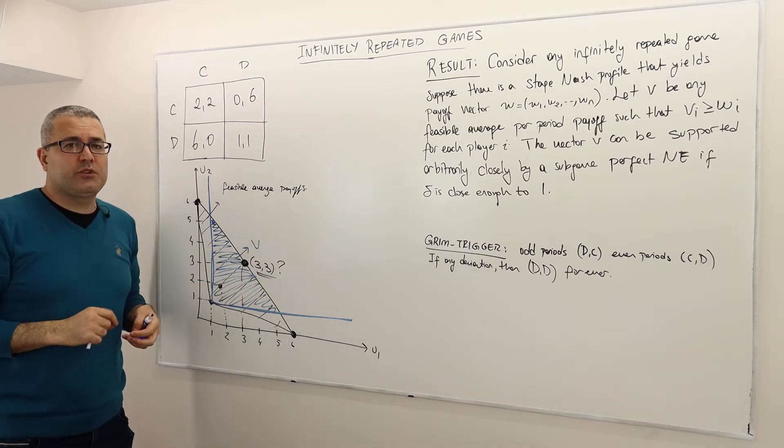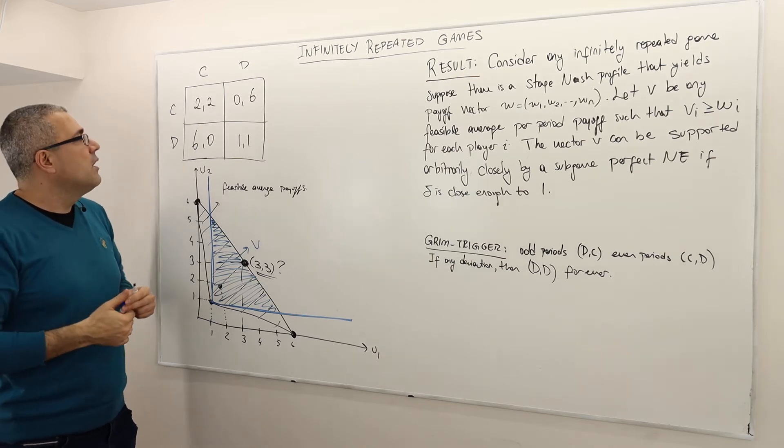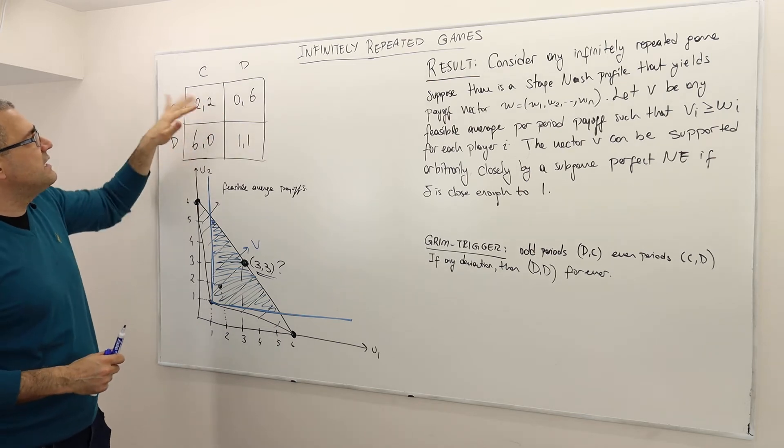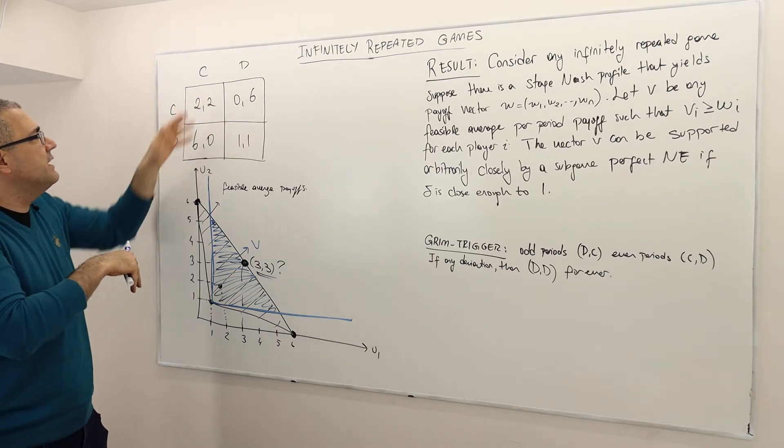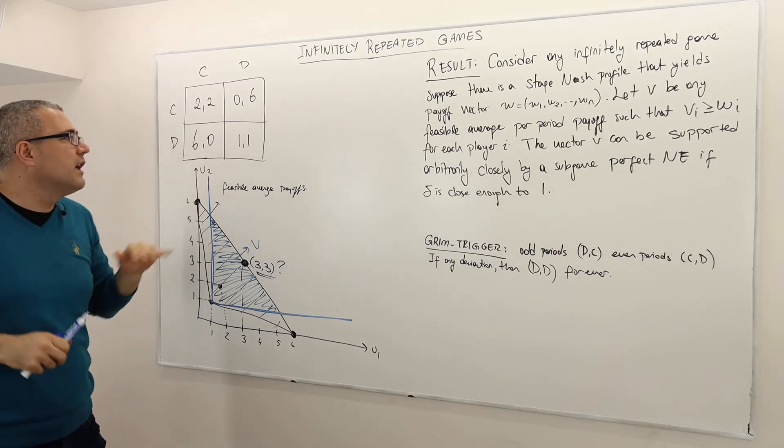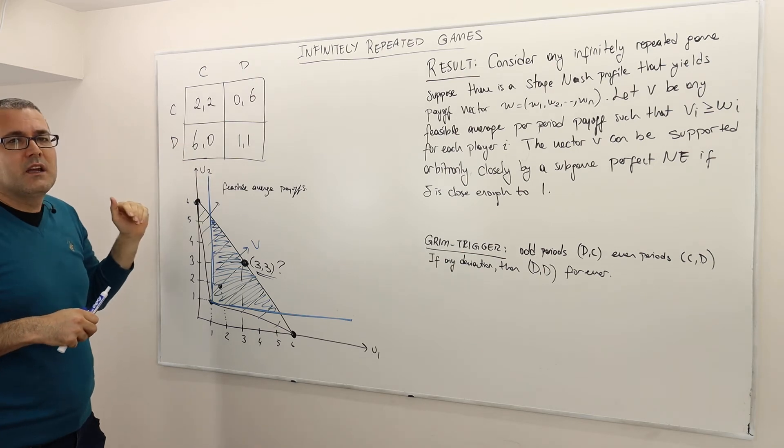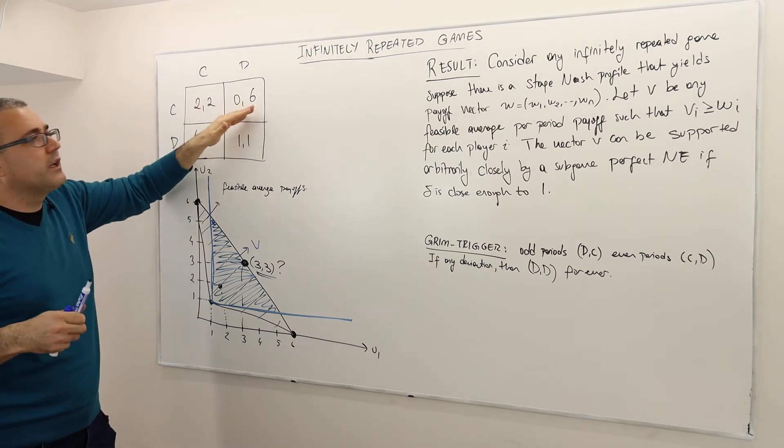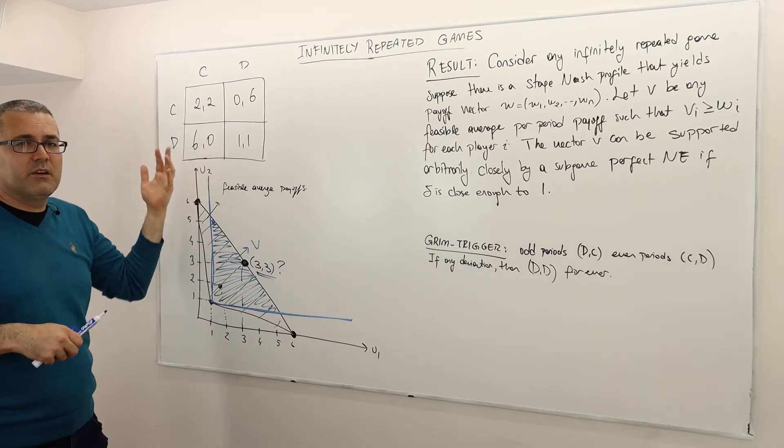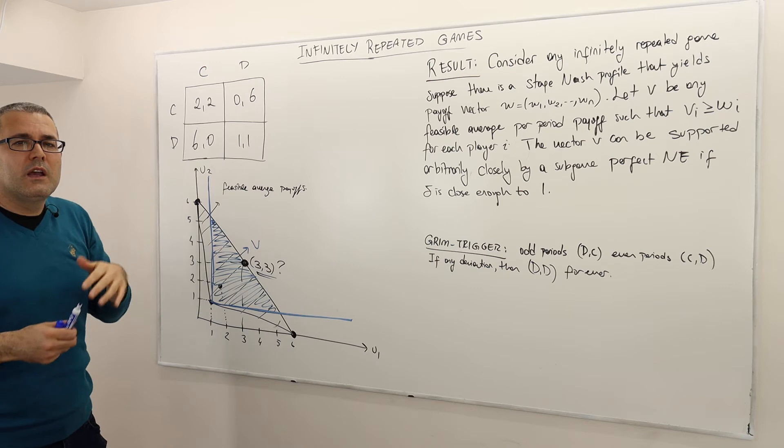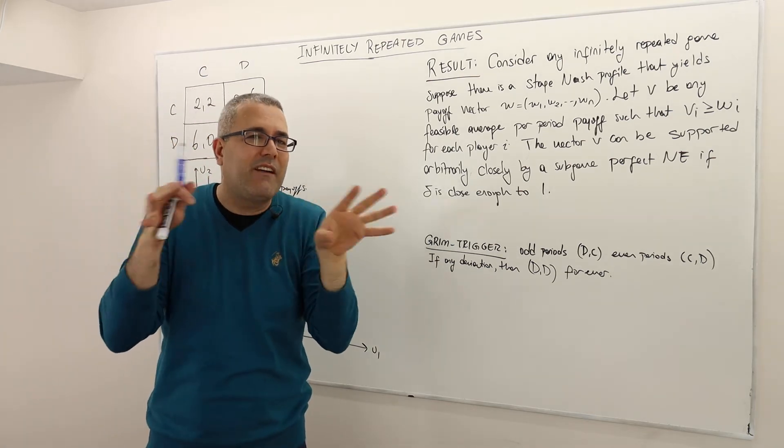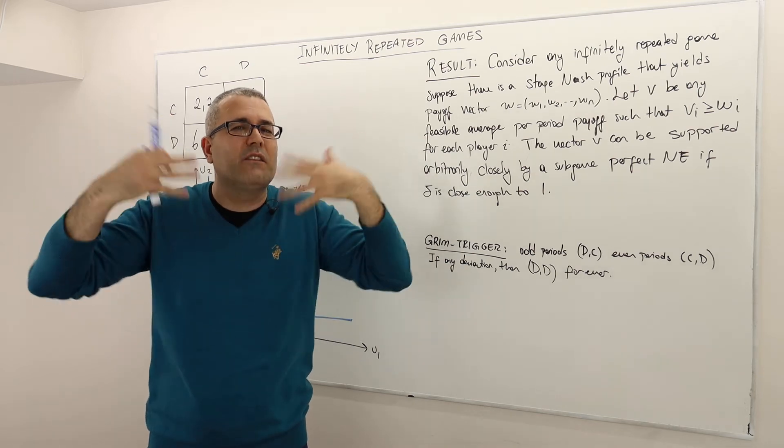Well yes, they can. How? Well, for example, what they can do, they can rotate between DC and CD. So sometimes they play DC, and so player 1 gets 6. So half of the times, let's think of it that way, alright? Half of the times player 1 gets 6, and half of the times player 2 gets 6. Obviously, for the rest of the half, player 1 is getting 0, and also player 2 is getting 0. So therefore, half of the time you get 6, half of the time you get 0, and so the average is 3, alright? So that's kind of the idea.